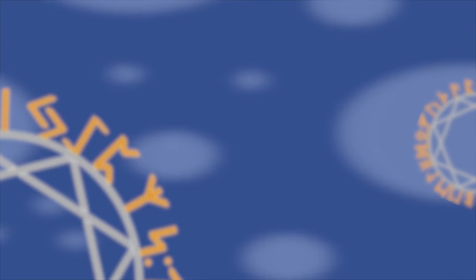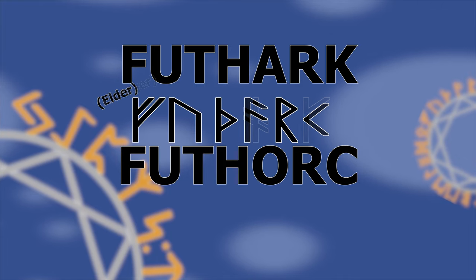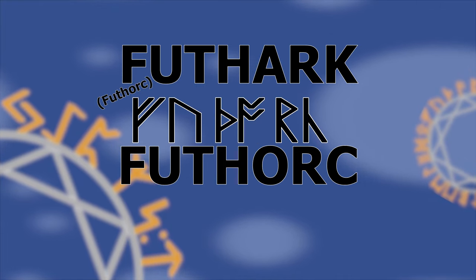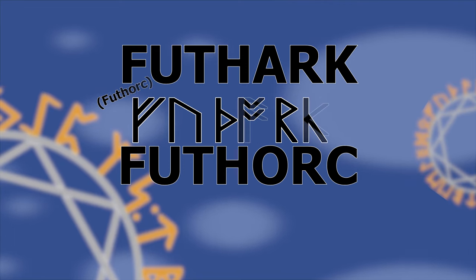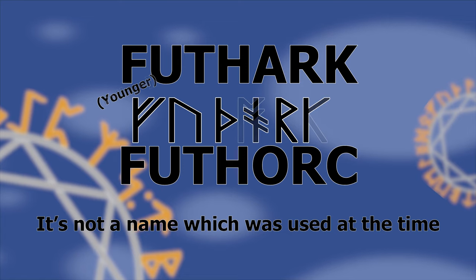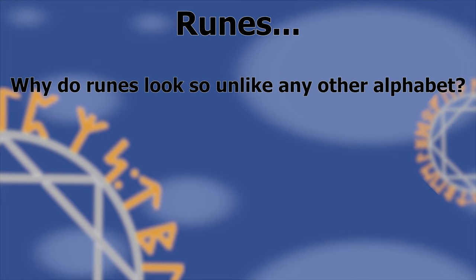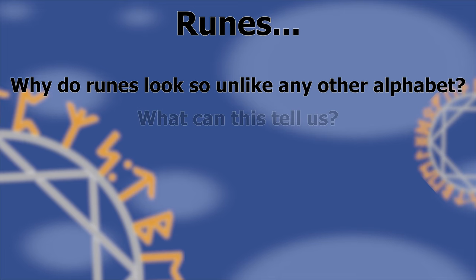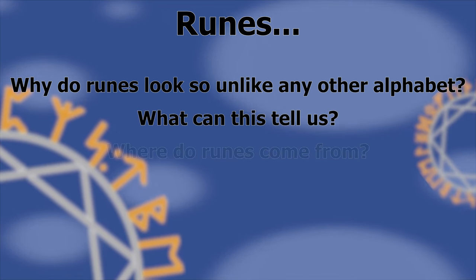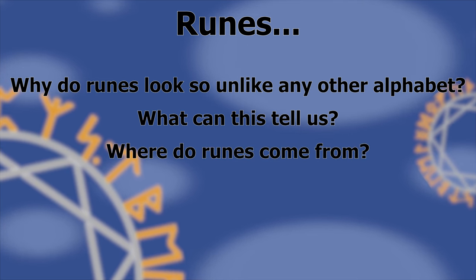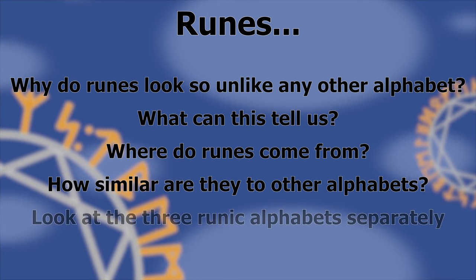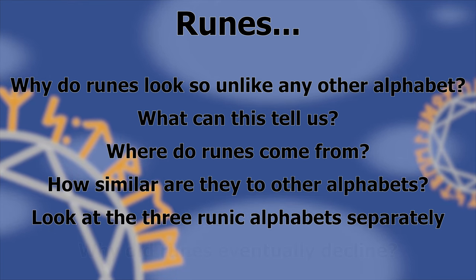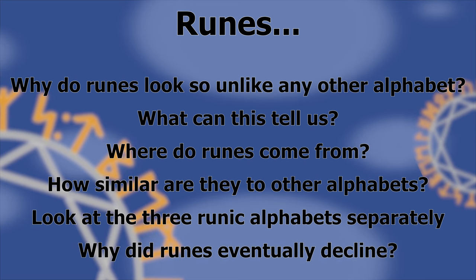The names for the complete runic alphabets, Futhark and Futhork, come from the sound value of the first six runes of their alphabets in their conventional order. Unlike the word rune, though, it's a name given by modern runologists to the runic alphabet — it wasn't used at the time runes were in use. When we look at runes, we need to consider why they look so stylistically unlike any other alphabet, where they come from, the three runic alphabets separately, their decline, and why they fell out of popular use.